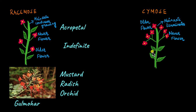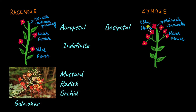In cymose inflorescence, the main axis first terminates in a flower. Unlike in racymose inflorescence where the main axis continues to grow, in cymose it terminates in a flower — and this is the first flower that is formed on this axis. After this flower has formed, which is now the older flower, newer flowers are added below the older flower. This type of arrangement where the older flower is on top and newer flowers are added below is called basipetal. Because in cymose inflorescence the main axis terminates in a flower, it cannot grow indefinitely — that's why cymose inflorescence is also called the definite type of inflorescence.